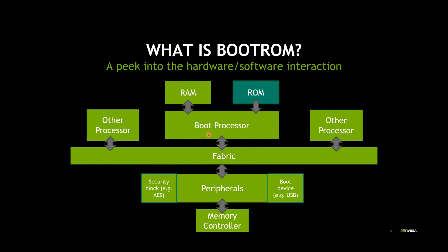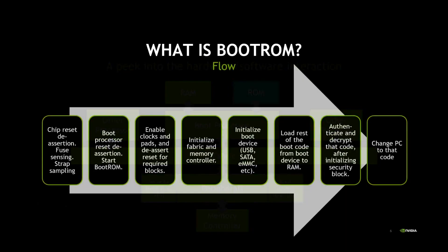Importantly, the boot processor uses the RAM to load code for subsequent stages of boot like microboot or bootloader from a boot device into the RAM, and then executes that code after boot ROM is finished. Here is a flow of the boot ROM.